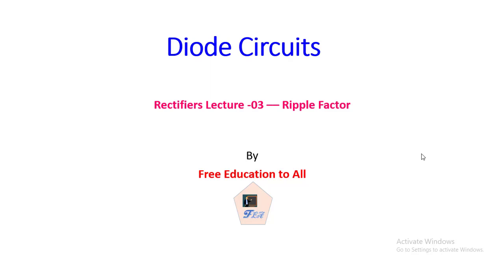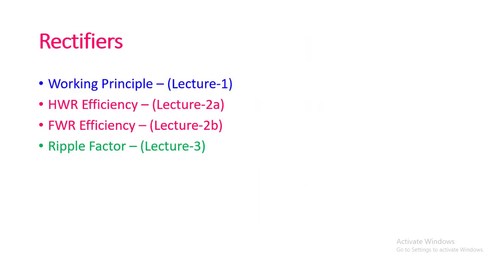We have come to the last lecture of this rectifier series. Here we would like to find the ripple factor for the full wave rectifier as well as for the half wave rectifier. So far we have covered the working principle, half wave rectifier efficiency, and full wave rectifier efficiency, and in this lecture we will try to find the expressions for the ripple factor.